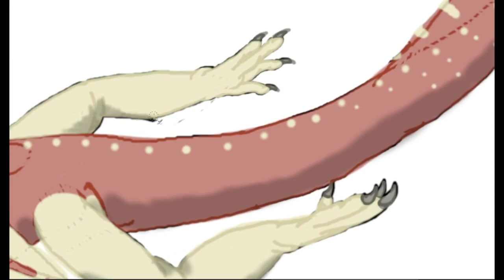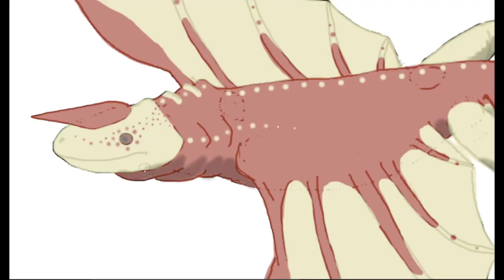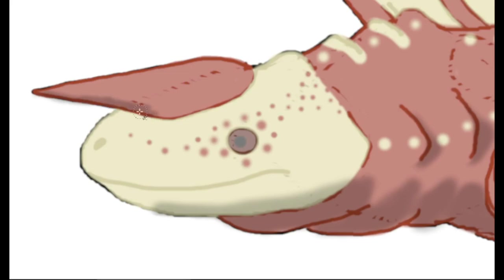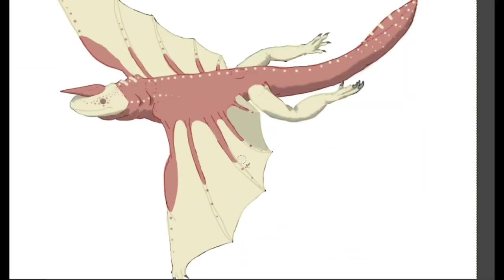While these arms are still useful for walking, the Iaculus can no longer use them to climb. Instead, it will climb trees by using its strong hind legs and muscular tail.